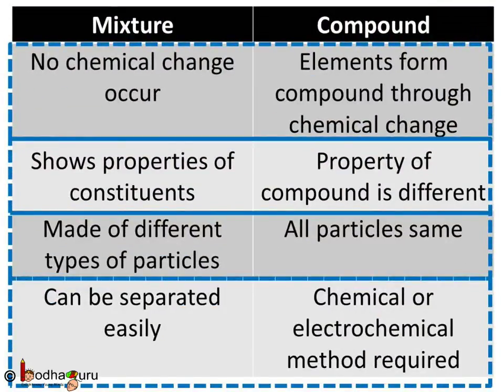A mixture is also made of two or more substances, and a compound is also made of two or more elements. So where is the difference? Elements go through chemical change to form compounds, but elements or compounds just mix together to form a mixture, and no new compound is formed. The properties of all substances remain intact in a mixture, but the properties of a compound are absolutely different from the properties of the elements it is made of.